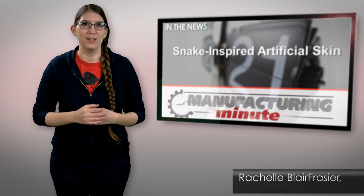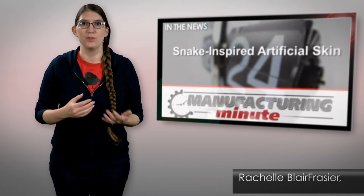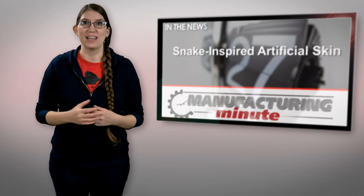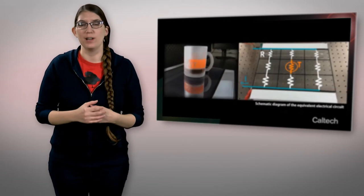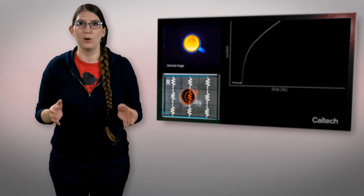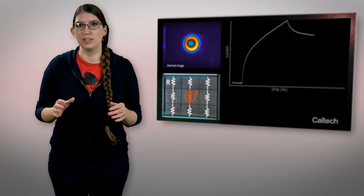A product that's used in everyday items such as jams and cough drops could be the future of robot skin. Researchers at Caltech and ETH Zurich have created an artificial skin out of pectin, a product used in food manufacturing as a jellying agent.